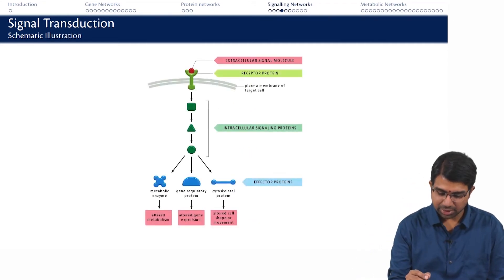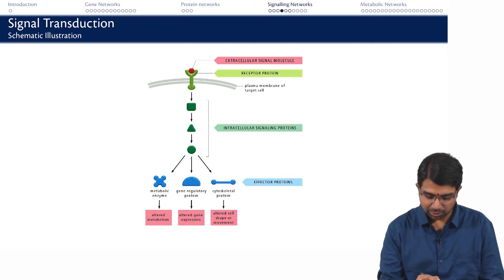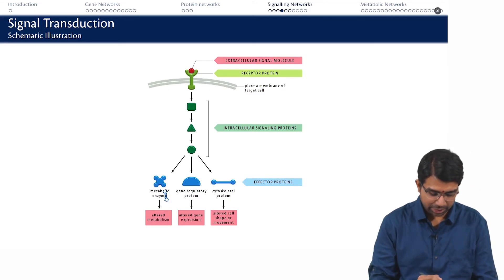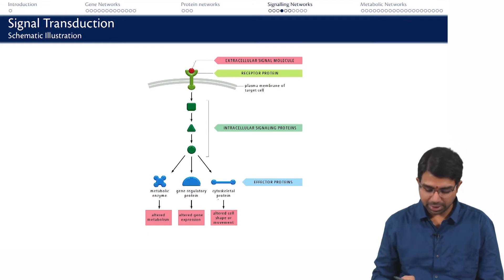What do you have? You have an extracellular signal molecule, a receptor protein usually outside the cell which may have an internal domain as you see here, then a bunch of internal signaling proteins, finally controlling either a metabolic enzyme or a gene regulatory protein or something cytoskeletal which will involve motility and so on. This is a classic canonical representation of any signaling pathway in any cell typically.